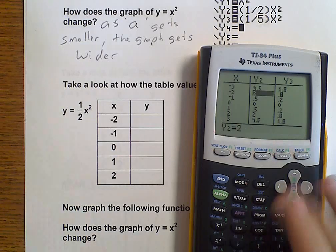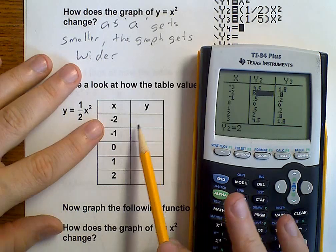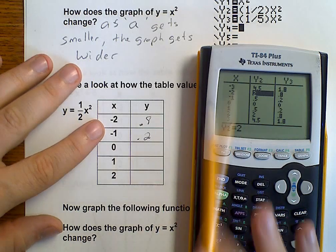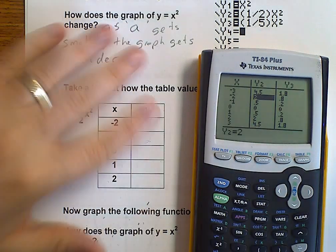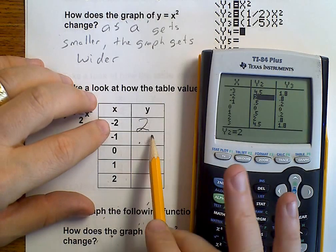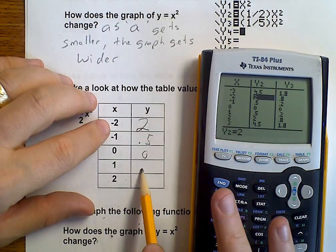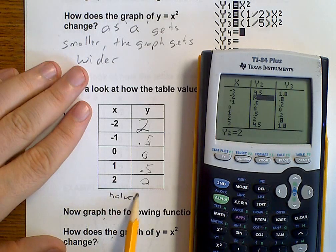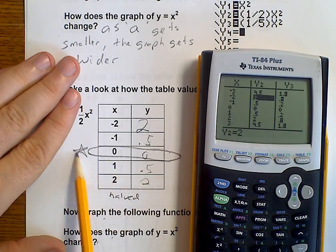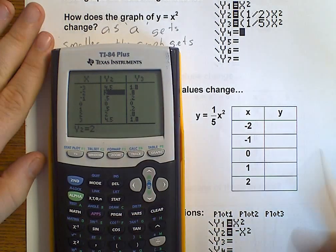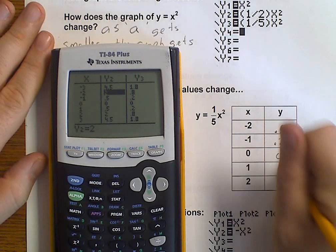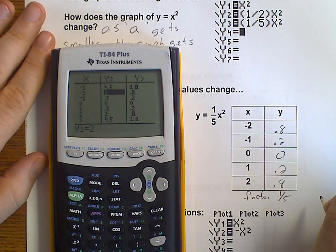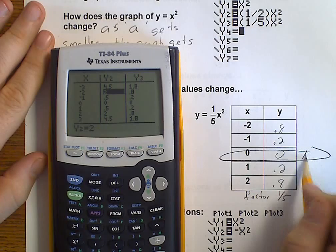So, as we get a smaller and smaller number up here in front of the x squared, our graph is just going to get wider and wider. Again, let's go to our table and see how these values changed. So, y2, those are the values that we were using for half x. So, that would be 2, and then 0.5. And then 0.5, and then 2. I want you to notice how these values are halved. And this one, again, stayed the same. Over here, this is 0.8, 0.2, 0, 0.2, and 0.8. These are, factor 1 5th. And again, that point stayed the same.